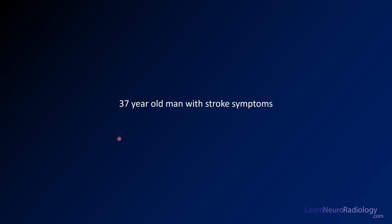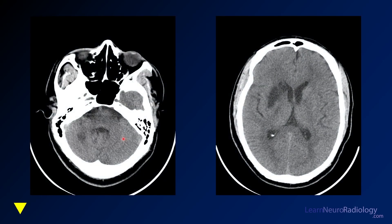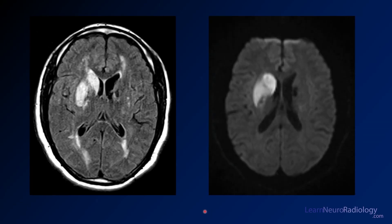We're going to start off with a case — a 37-year-old man with stroke symptoms. Here are just a few images from a CT. This is a screening exam. You can see maybe there's an abnormality in the right cerebellum, and clearly the right basal ganglia, including the caudate and putamen, don't look normal. So we're going to go on to an MRI.